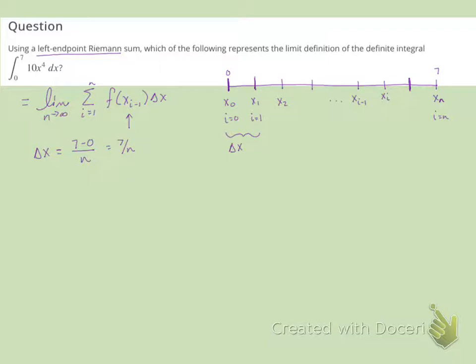So then using this idea, we can figure out how we get to the next x value. So if we're starting at x, at 0, and x sub 0 equals 0, then x sub 1 is going to be 0 plus 7 over n, and then x sub 2 is going to be, we're going to add 7 over n again, giving us 0 plus 2 times 7 over n.